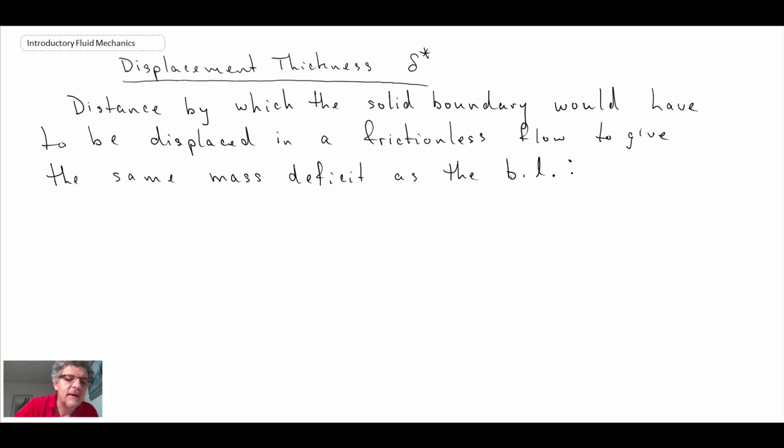The displacement thickness is defined as the distance by which a solid boundary would need to be increased or displaced in order to provide the same mass deficit as the boundary layer is providing. Let's take a look at what that is visually.